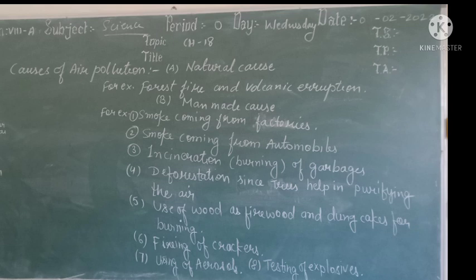Forest fire is an example of a natural cause. During the summer season, due to the collision of branches of trees, a spark is produced which can give rise to a fire in the forest. This is called forest fire. Due to forest fire, smoke is produced in large amounts and it causes air pollution. This smoke mostly contains oxides of carbon — carbon monoxide and carbon dioxide — which are the pollutants of air pollution.